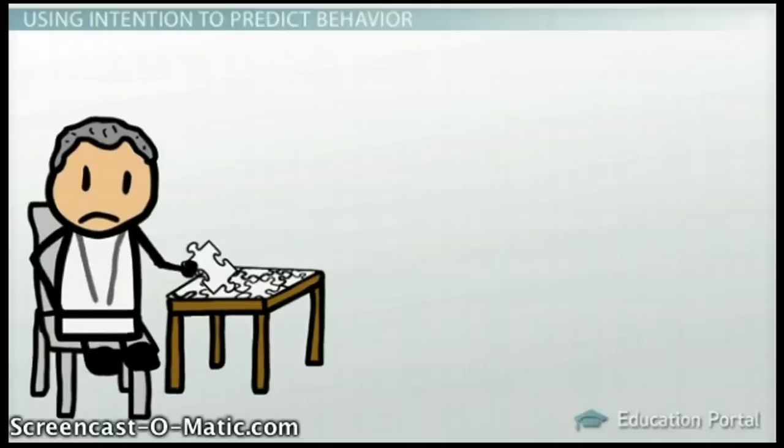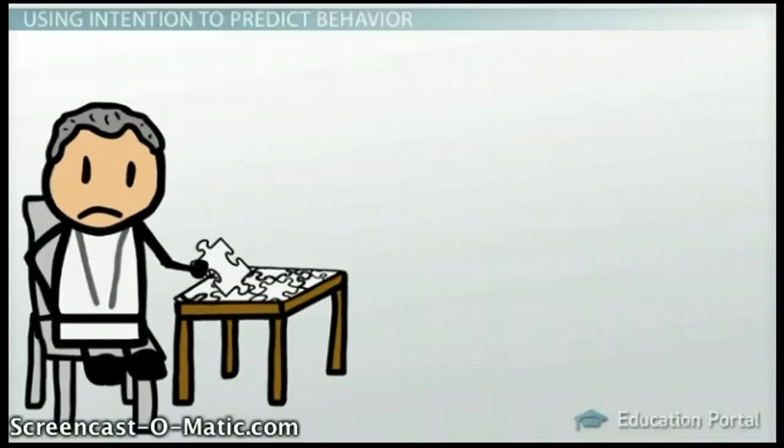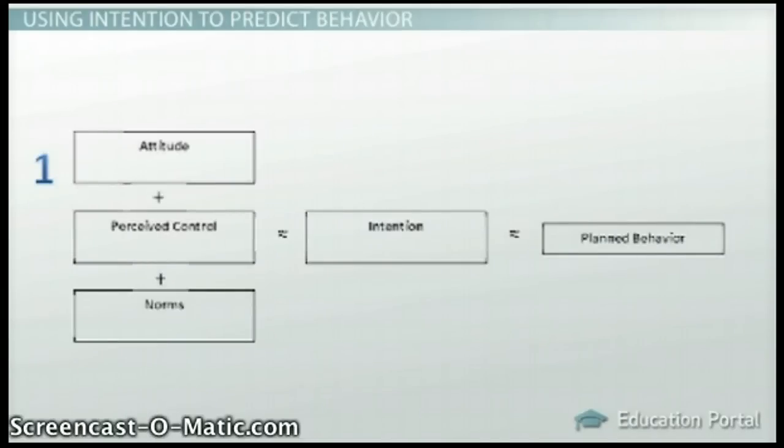But again, it is not the only piece of the puzzle. This equation shows all of the important pieces of the theory of planned behavior. As previously mentioned, intention is believed to be determined by three things: attitude, perceived control, and subjective norms.